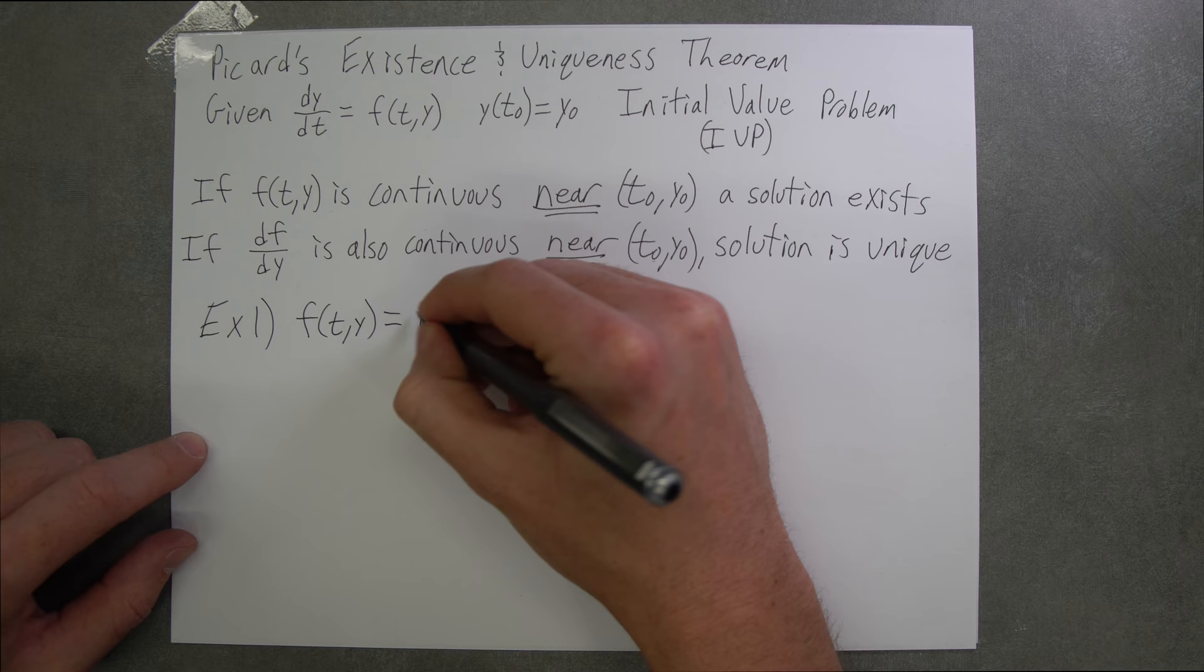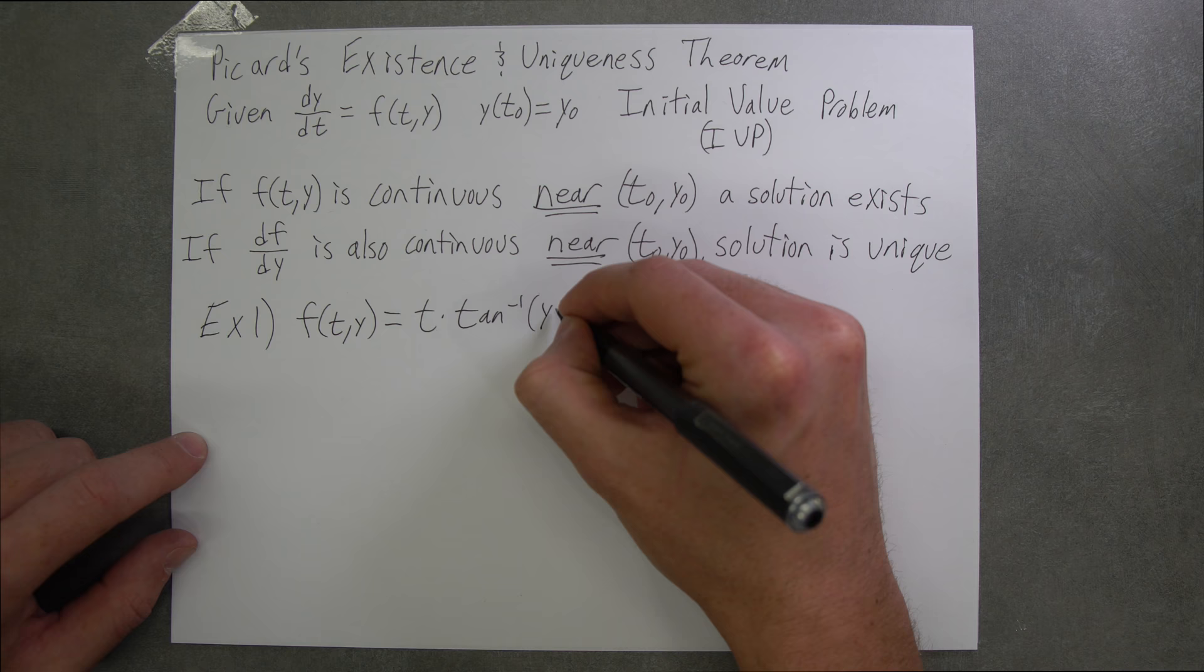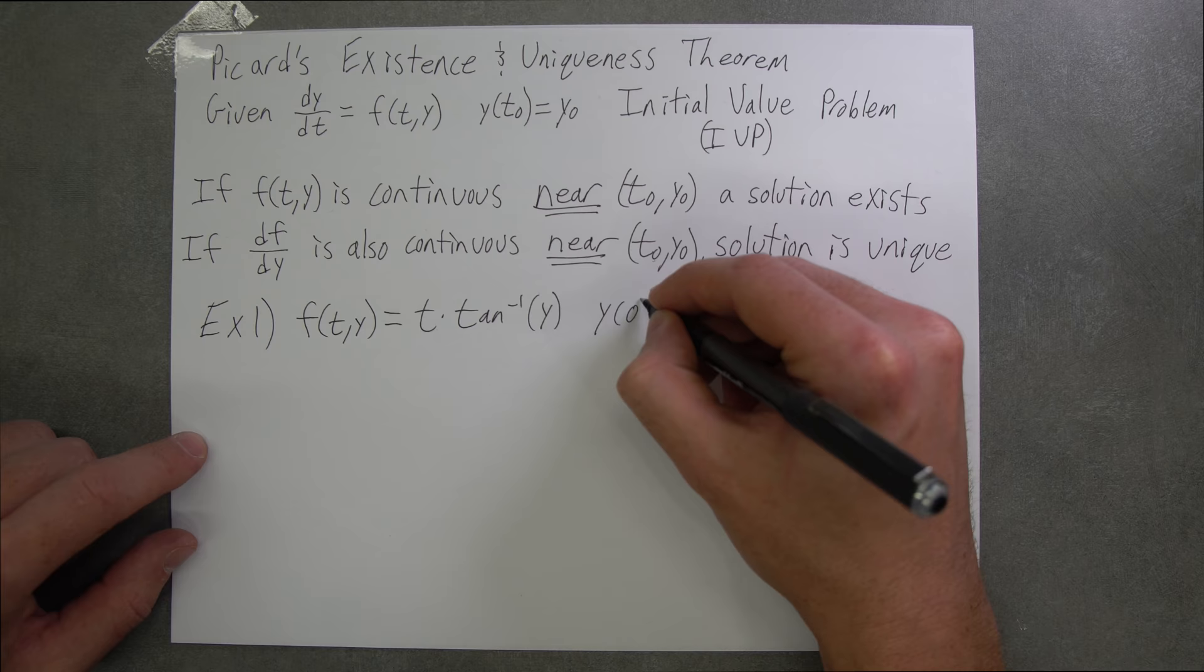f(t,y) is going to be equal to t times the arctangent of y. And our initial condition, initial value, is y(0) = 0.